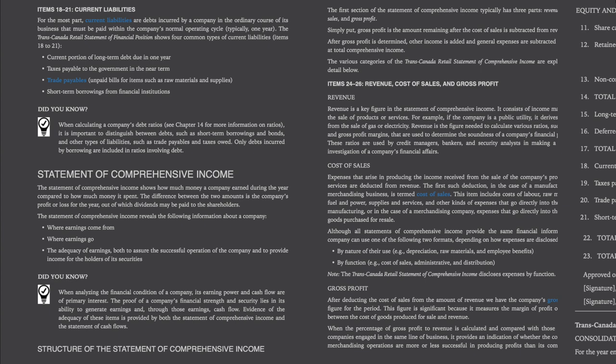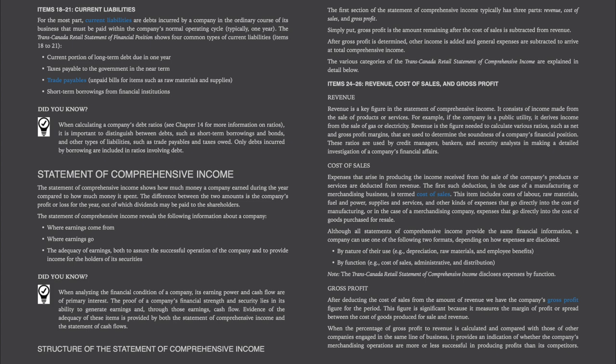Statement of Comprehensive Income. The Statement of Comprehensive Income shows how much money a company earned during the year compared to how much money it spent. The difference between the two amounts is the company's profit or loss for the year, out of which dividends may be paid to the shareholders. The Statement of Comprehensive Income reveals where earnings come from, where earnings go, and the adequacy of earnings both to assure the successful operation of the company and to provide income for the holders of its securities. When analyzing the financial condition of a company, its earning power and cash flow are of primary interest. Evidence of the adequacy of these items is provided by both the Statement of Comprehensive Income and the Statement of Cash Flows.